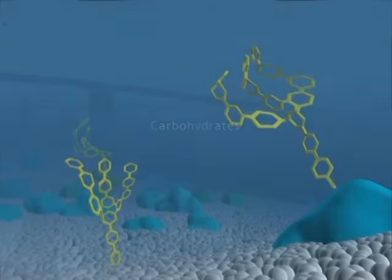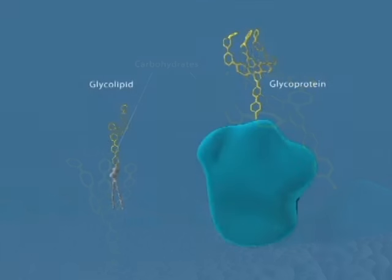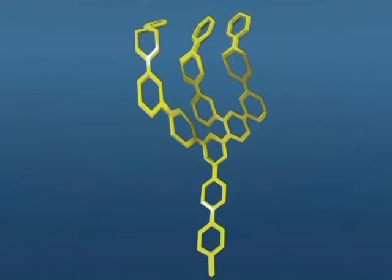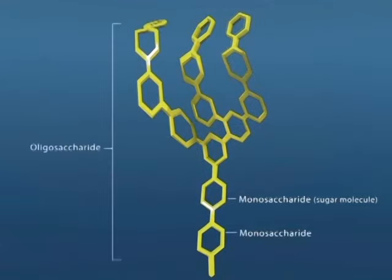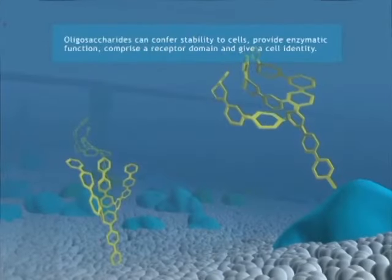The extracellular surface of the cell membrane is decorated with carbohydrates attached to components, producing glycolipids and glycoproteins. These linked carbohydrates consist of chains of 15 or fewer sugar molecules and are termed oligosaccharides. Oligosaccharides can confer stability to proteins, provide enzymatic function, comprise a receptor domain, or give a cell identity, for example, distinguishing self from non-self.